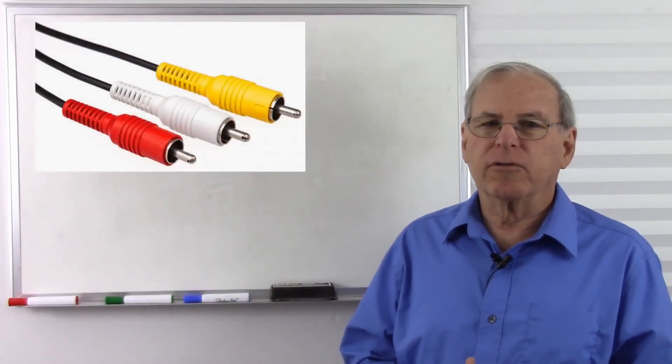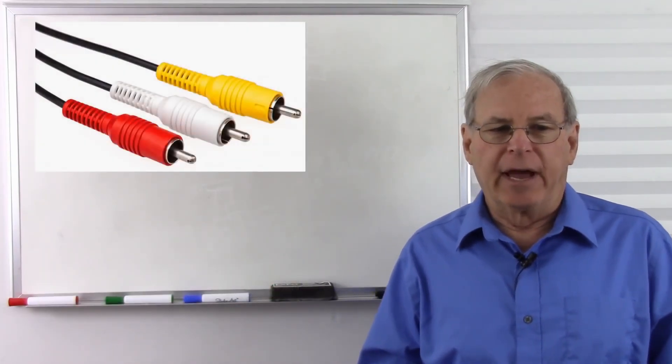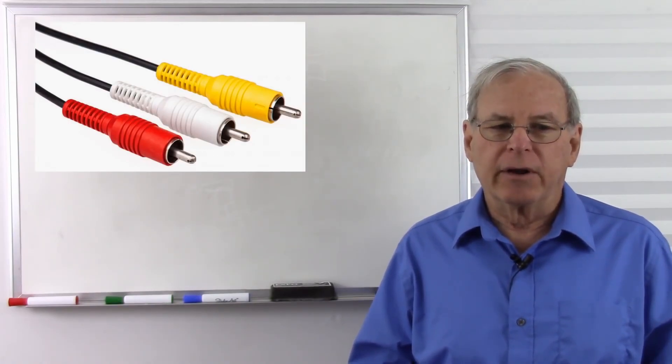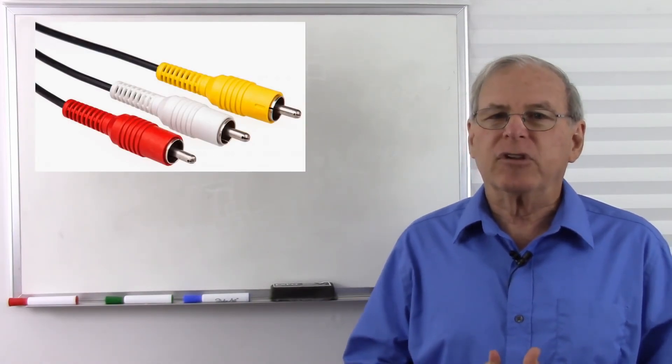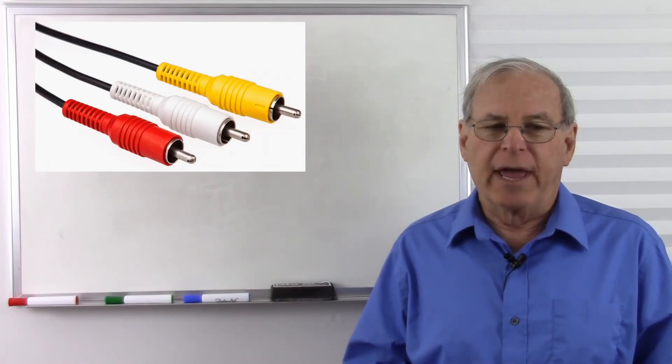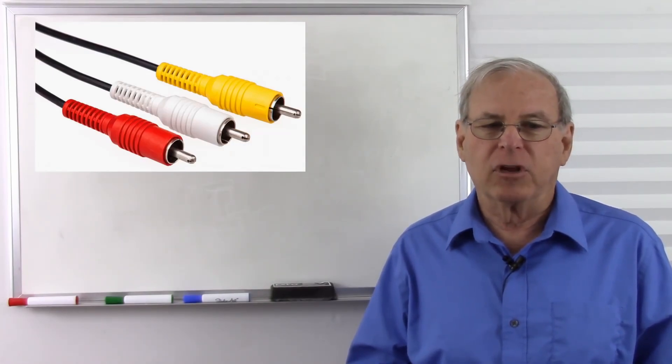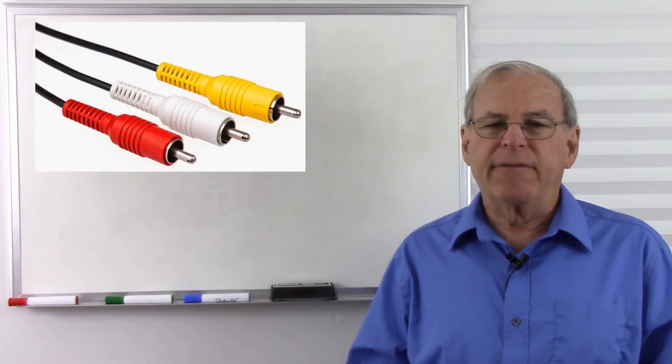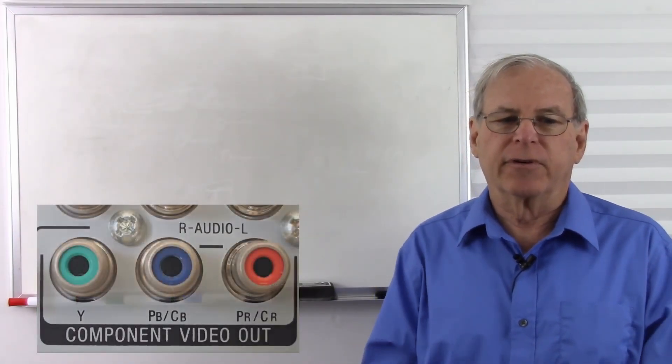Notice we have a number of different color codes, which mean different things. Here we have the most common, where we have audio and video. Video is yellow, and then the audio we have red for the right channel and white, sometimes black, but usually white for the left channel. And we have other colors that mean other things to different systems.